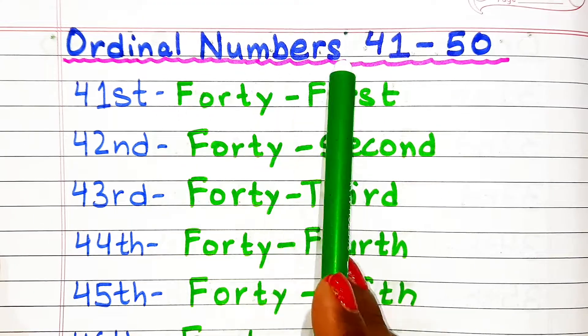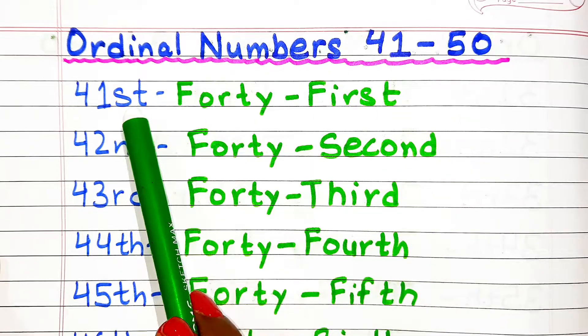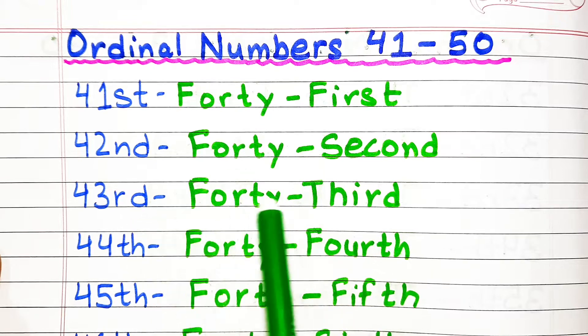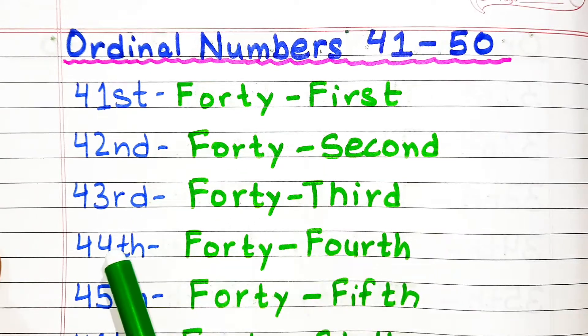Ordinal numbers from 41 to 50. Forty-first, forty-second, forty-third, forty-fourth.